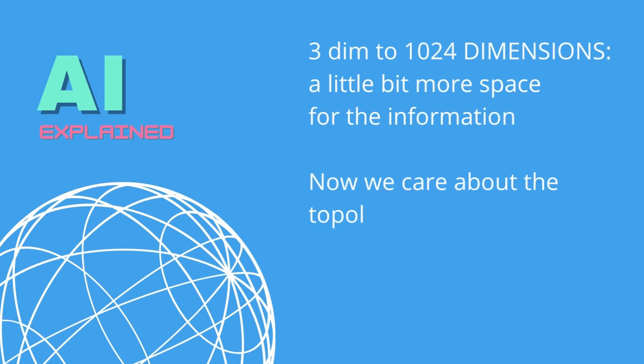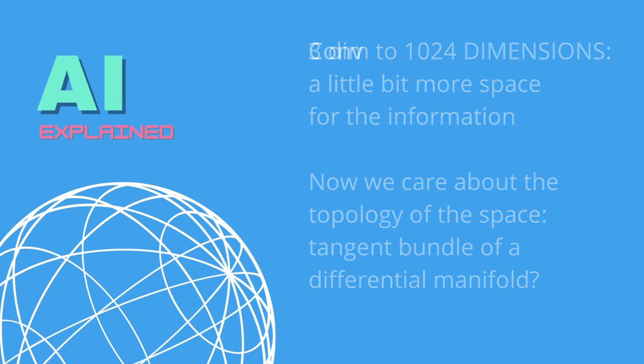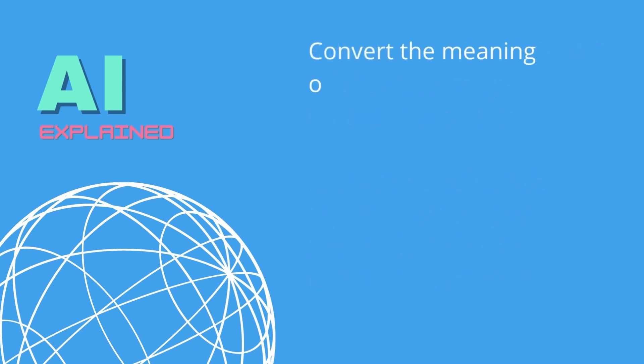And we have to care a little better about the topology of the space, because we want to do some dot product, we want to have some differentiation capabilities. But more or less, we convert the meaning of one sentence into one vector in a space.